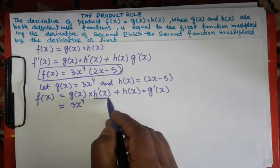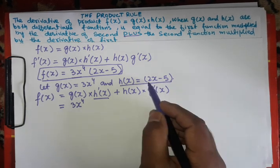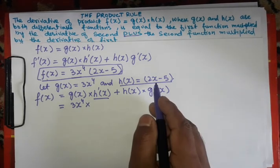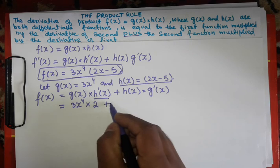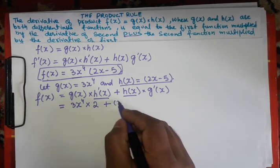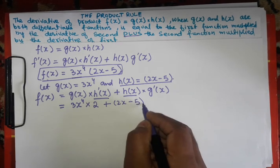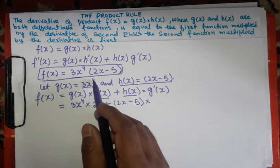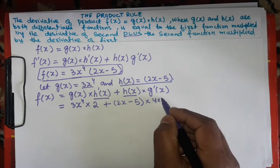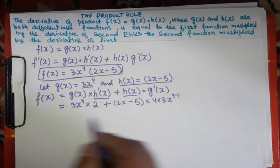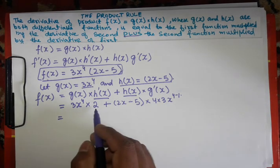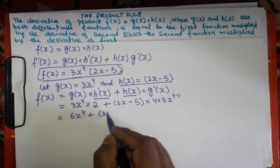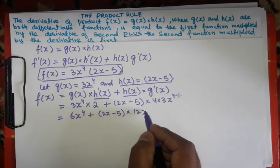Now the derivative of h(x): the derivative of 2x is 2, and the derivative of 5 is 0. So times g'(x), the derivative of g(x) will become 4 times 3, x to the power 4 minus 1. So the function becomes: 2 times 3x to the power 4 gives 6x to the power 4, plus (2x minus 5) times 12x cubed.